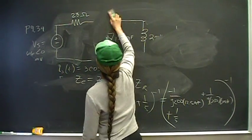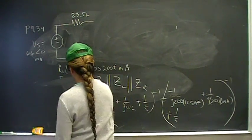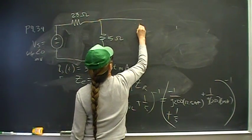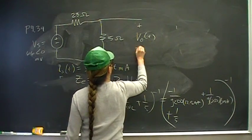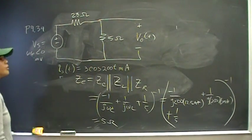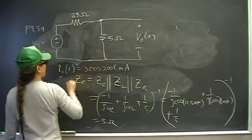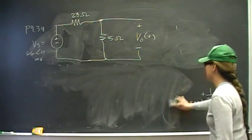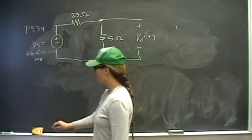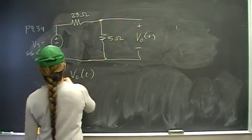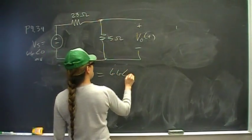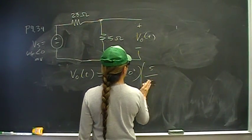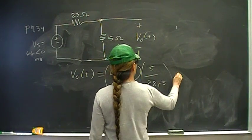I'm going to redraw my circuit to a much simpler form. And isn't that a circuit we know how to solve? Sure, it's a voltage divider circuit. And its voltage is going to be weighted, so V_0 of t is going to be the total voltage equal to 66 angle 0 times 5 over 28 plus 5 millivolts.